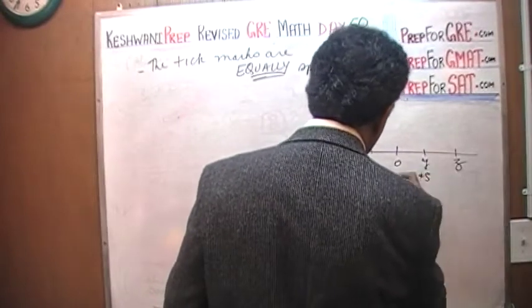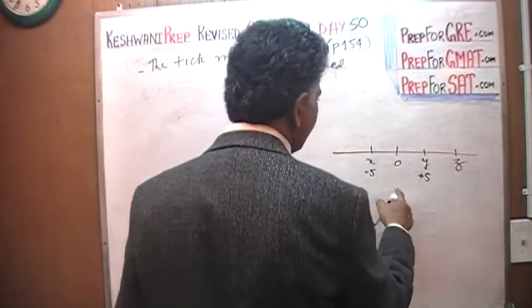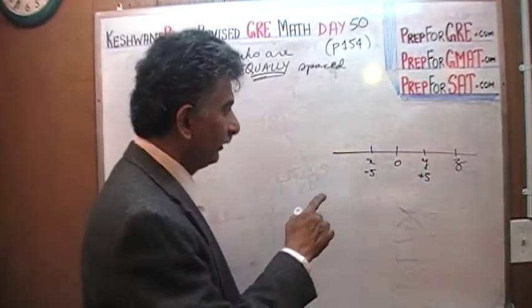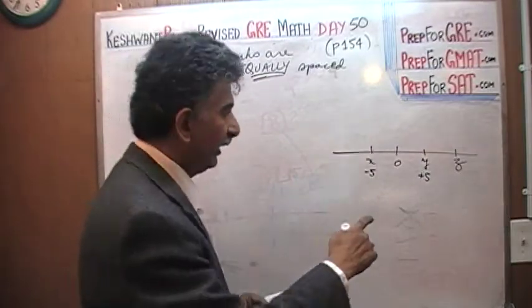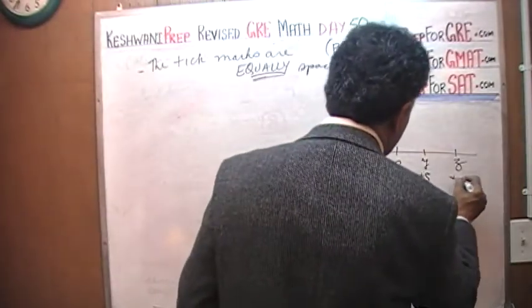If this is 0, let's make this a positive 5 and this is negative 5 because they are equally spaced. All the tick marks are equally spaced. So we are talking about the difference of 5. If this is 5, this has got to be positive 10.